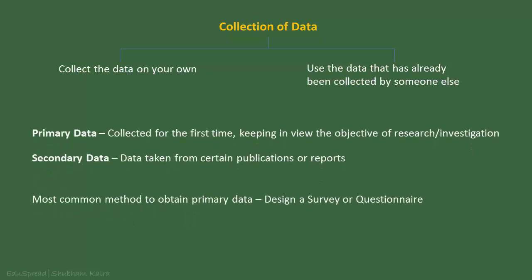If you collect the data for the first time keeping in view the objective of your research or investigation, then it is called primary data. On the other hand, if you take the data from certain publications or reports, then it is called secondary data. Secondary data is the data that is already collected by some other agency in the past for some purpose.